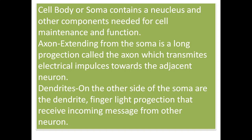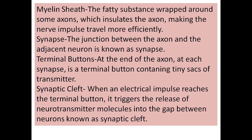The cell body or soma contains a nucleus and other components needed for cell maintenance and function. The axon, extending from the soma, is a long projection that transmits electrical impulses toward the adjacent neuron. On the other side of the soma are the dendrites — these are the finger-like projections that receive incoming messages from other neurons.